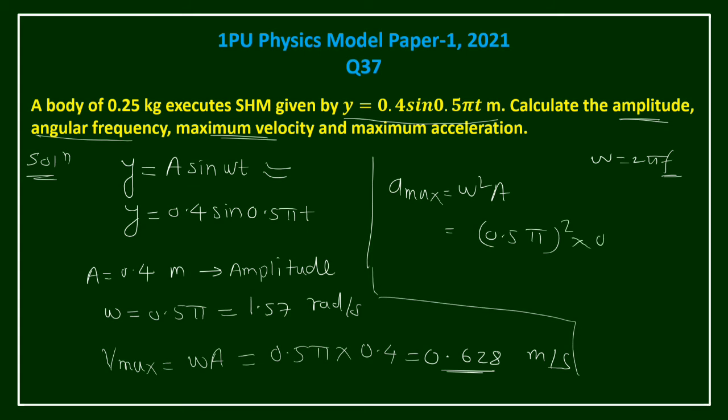So do this calculation. This is 0.5 into π - it's square now - square into 0.4. So this is almost 0.986, so approximately you can write 1 meter per second square or 0.98 meter per second square. This is your final answer.